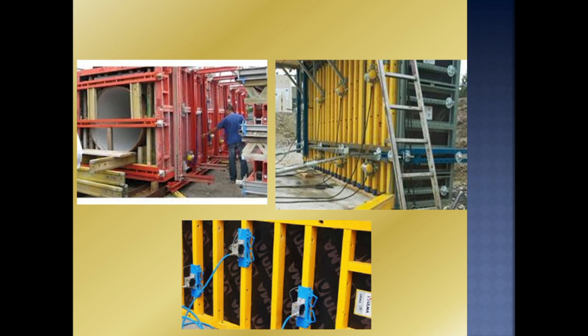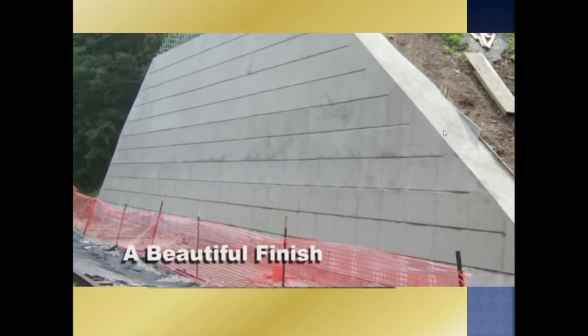When we work with formwork, we need to place the vibrator as well. The formwork must be leak-proof and the number of joints must be low. If there are many joints, we need to change and fix the vibrator, which is not easy. We also need to keep the vibrator with care. The formwork must be leak-proof with all bolts tightened.